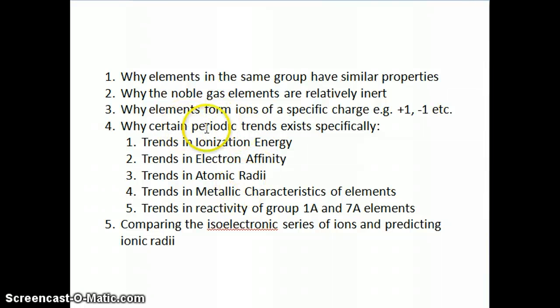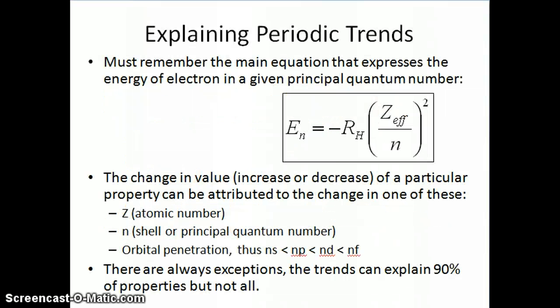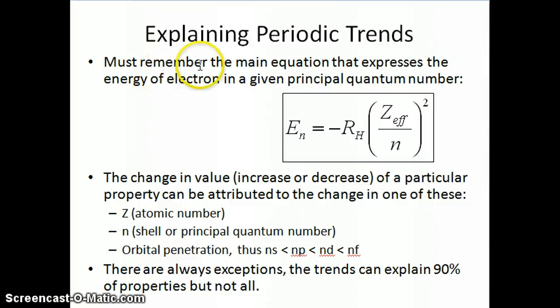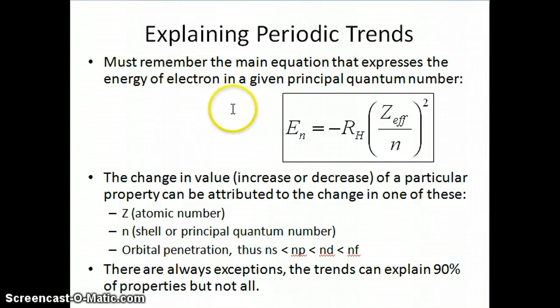The first trend we're going to talk about is trends in ionization energy. We'll first talk about what ionization energy is, and then talk about how to explain the trend. But before we get into these different trends, I want to start by saying that all of these trends can really be explained if you understand the energetics of the electron in the atom or the ion.